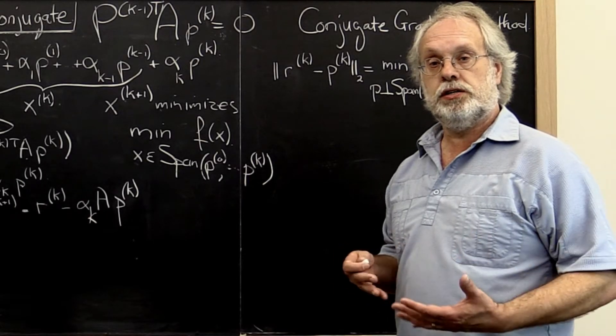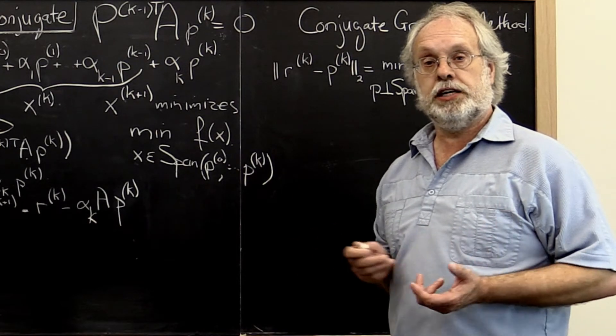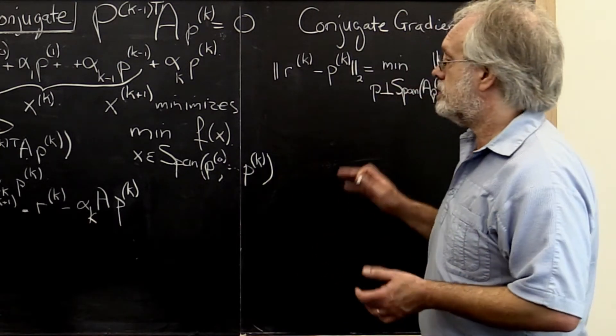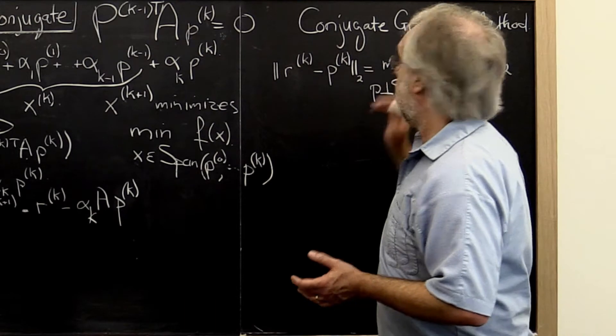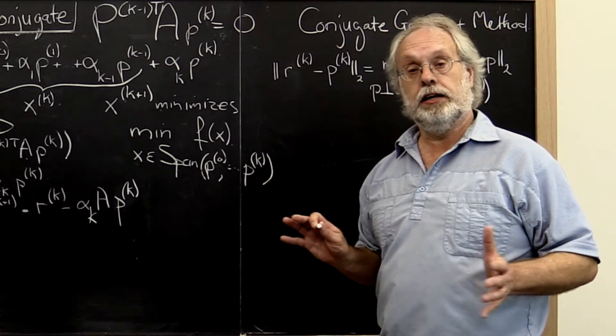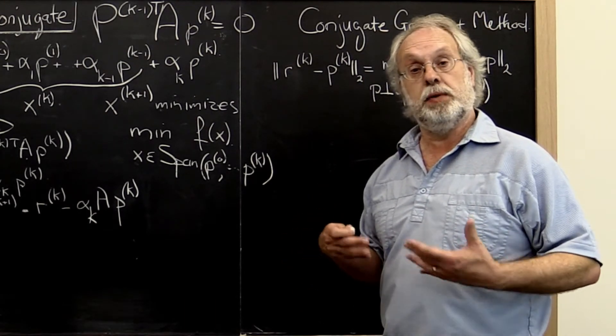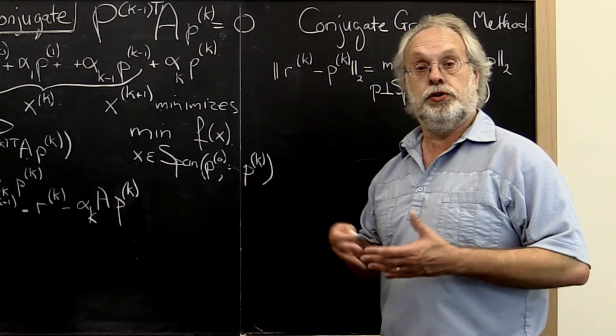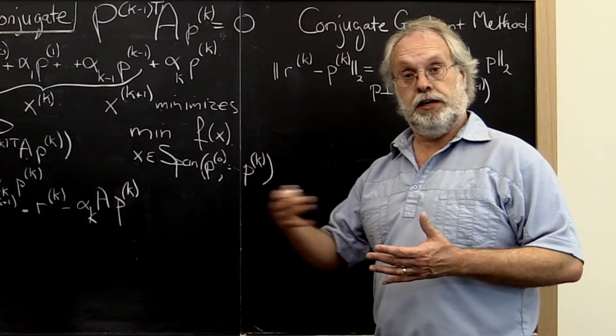In this unit we will discuss a sequence of rather technical results that will allow us to state the conjugate gradient method very elegantly and in a way that makes it practical, that makes it cheap to compute the new search direction in every iteration.